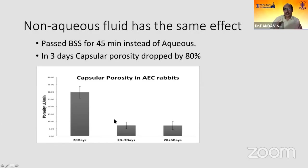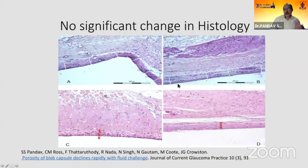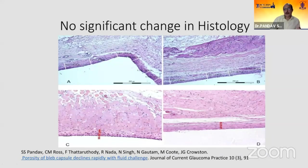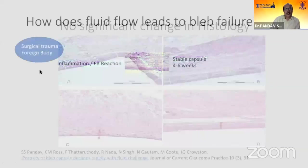Because this experiment was done over only one month, we didn't see capsule thickening per se, but porosity went down, meaning IOP went up without increasing capsule thickness. From this, we deduce that capsule thickening may be a secondary phenomenon, while the primary phenomenon is reduced porosity on exposure to aqueous or any fluid like BSS.